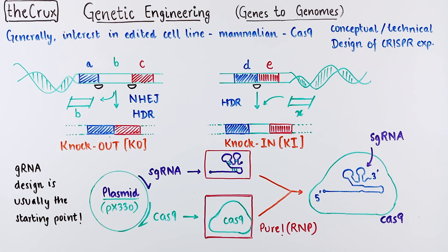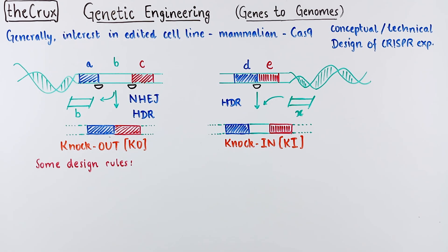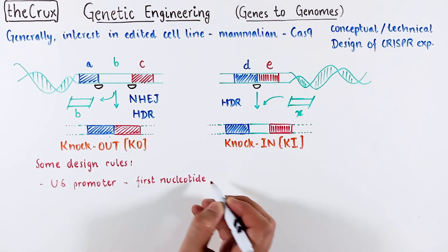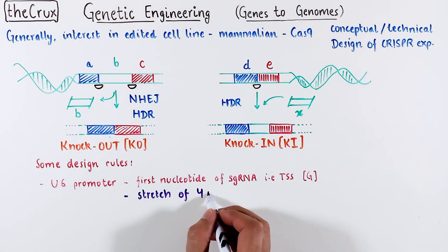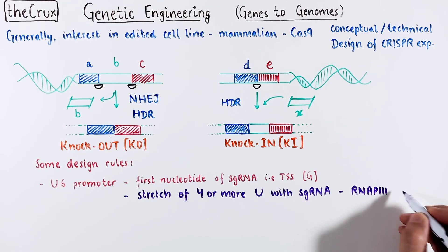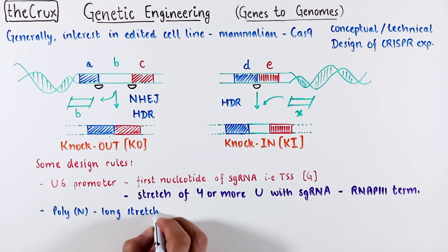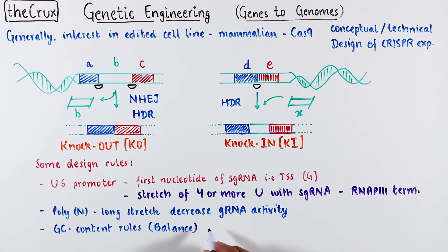For a typical Cas9 guide, you run through off- and on-target scores and efficiency. And make sure if you have a U6 promoter for guide expression, there's a G in the front, and hopefully the guide does not have a stretch of T's longer than three nucleotides. Otherwise, RNA polymerase will terminate transcription. Typically, nucleotide repeats will lower the targeting efficiency. The rules around GC balance of a guide are still debated, but if you can get closer to 50% GC, it works out just fine.